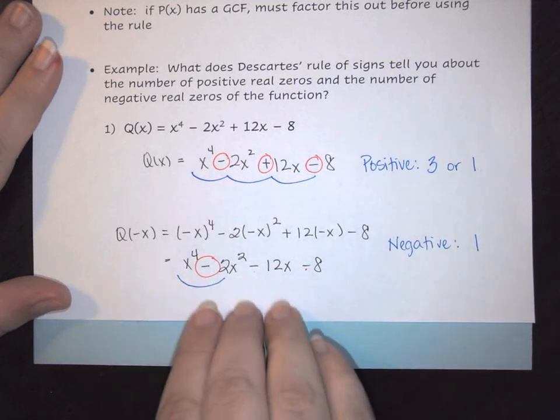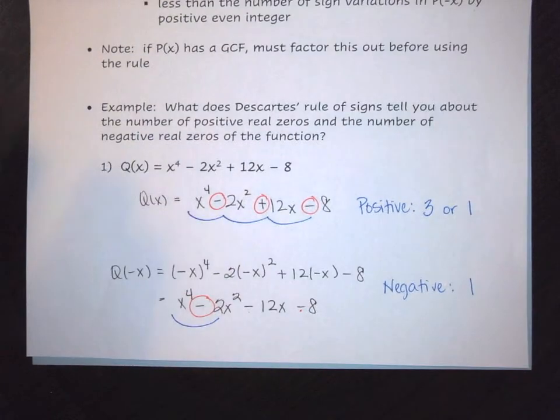This leaves room for complex zeros if you only have 1 positive. Descartes' rule is just telling you the possibilities. That's how Descartes' rule of signs works for polynomials. If you have any questions, please let me know. I hope you enjoyed this video on Descartes' rule of signs.